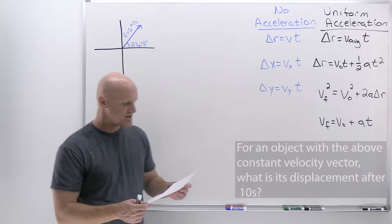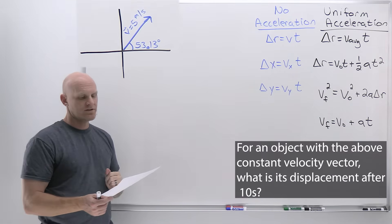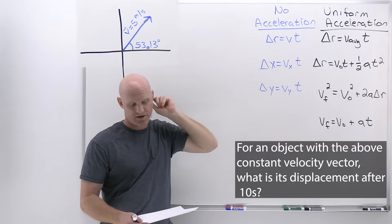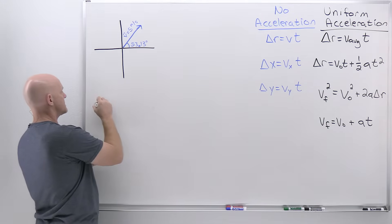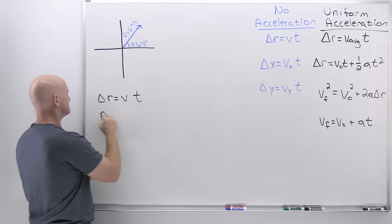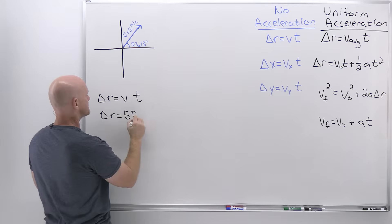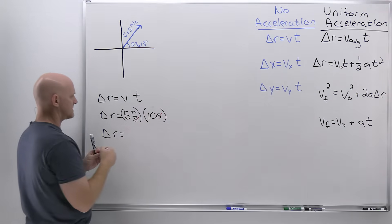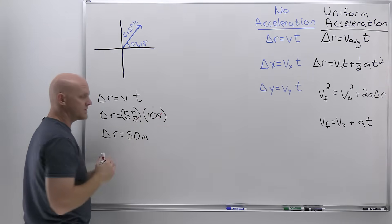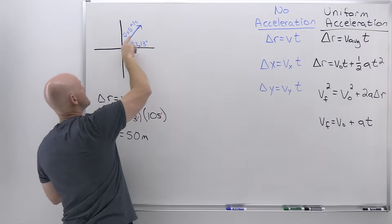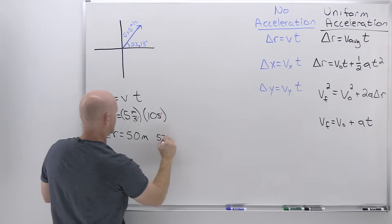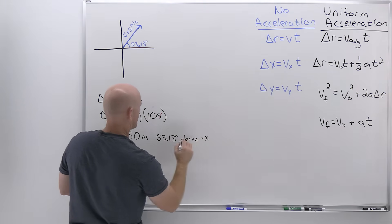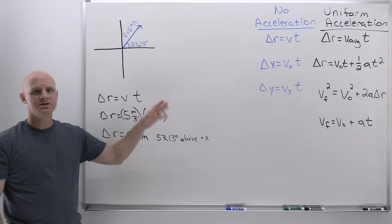The first question: for an object with the above constant velocity vector, what is its displacement after 10 seconds? Constant velocity means no acceleration, so displacement equals velocity times time: 5 meters per second times 10 seconds equals 50 meters. But that's just a magnitude — we need a direction. The direction is the same as the velocity vector: 53.13 degrees above the positive X axis. That gives us our displacement vector with magnitude and direction.